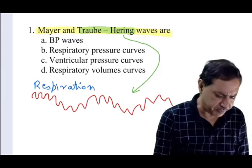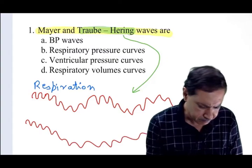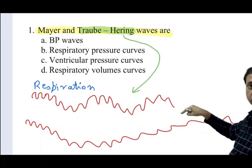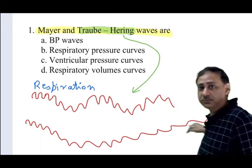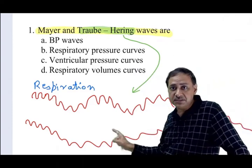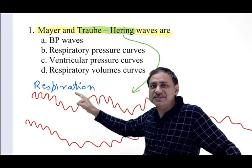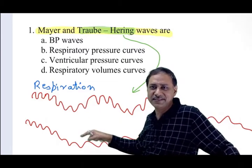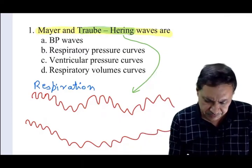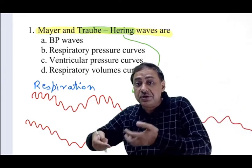Sometimes BP fluctuates in another pattern — BP goes down, slowly up, again down, again up. But this fluctuation does not correspond to respiration, so obviously it is not because of respiration. This fluctuation in BP is because of feedback oscillations in a control system.